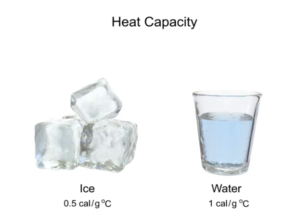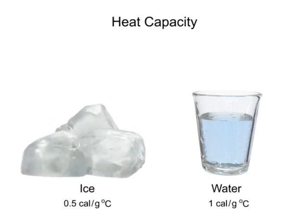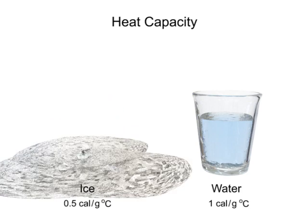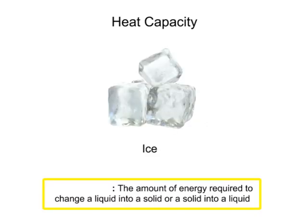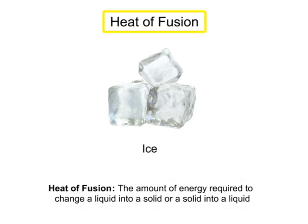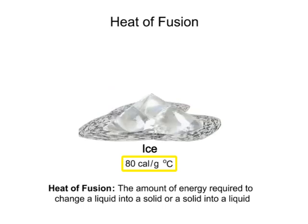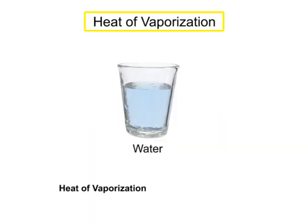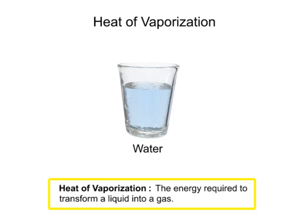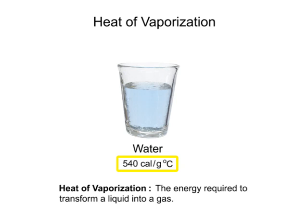The processes of phase change between solid, liquid, and gas also require a specific amount of heat energy. The amount of energy required to change a liquid into a solid or a solid into a liquid is known as heat of fusion. The amount of heat required to change 1 gram of ice to water is 80 calories. Similarly, the heat of vaporization is the energy required to transform a liquid into a gas. It requires 540 calories to change 1 gram of liquid water into a gas.